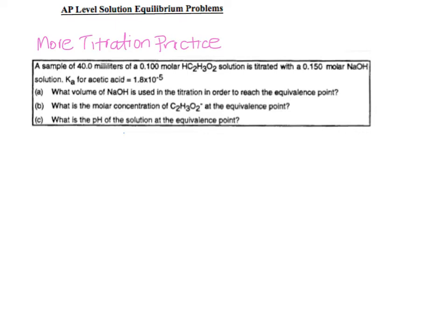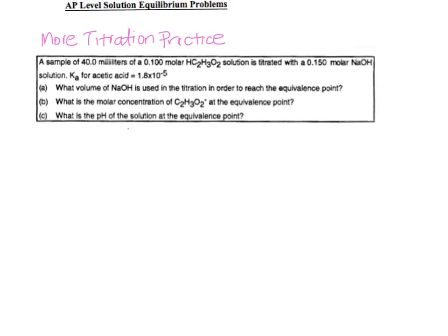In this first problem, there's an acid-base titration going on where we have a strong base, sodium hydroxide, titrated with acetic acid. They give us 40 mL of 0.1 molar acetic acid titrated with 0.15 molar sodium hydroxide. The first thing you need to do before any titration problem is write out that equation so we can see visually what's going on.